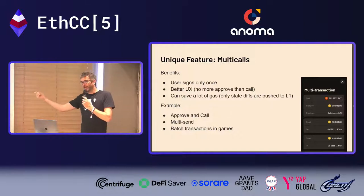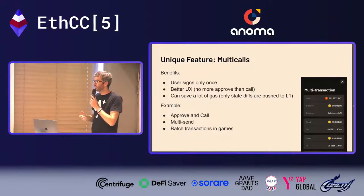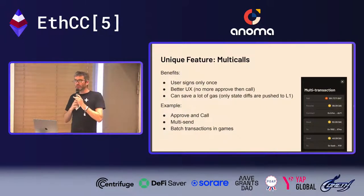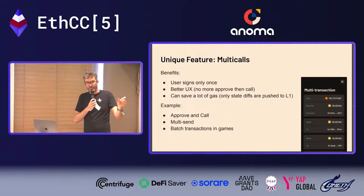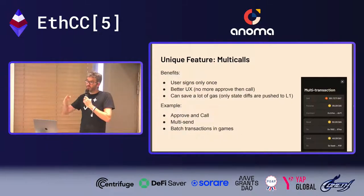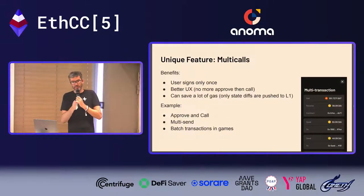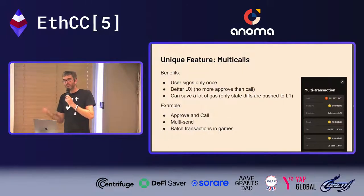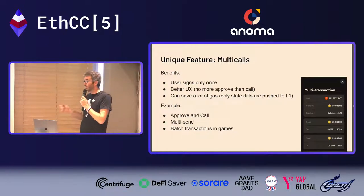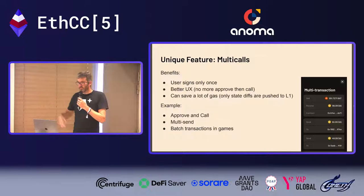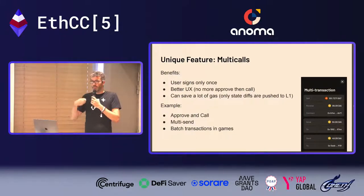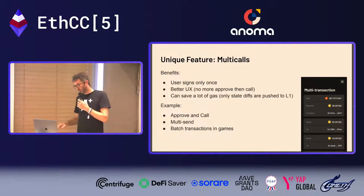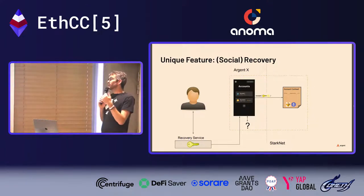You can tell the user: I need to consume 20 DAI — the multicall approves 20 DAI and executes the operation in one shot. On StarkNet, the main cost of a transaction is publishing state differences to L1. With multicall, if the state reaches an intermediary state that's rolled back before transaction end, you don't pay for that state change — so complex operations can actually be much cheaper than on L1.